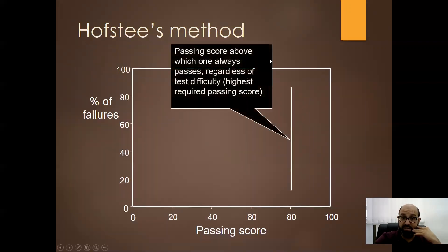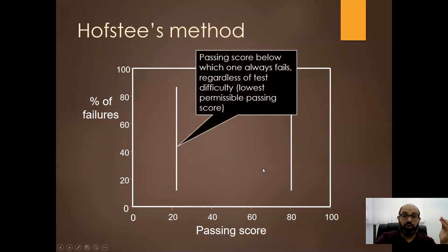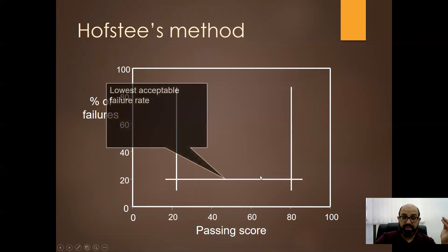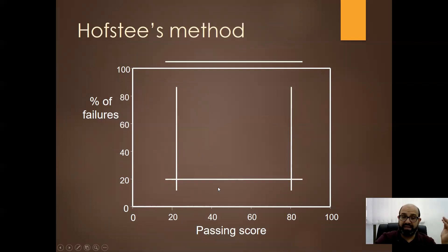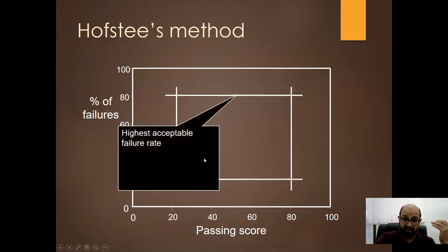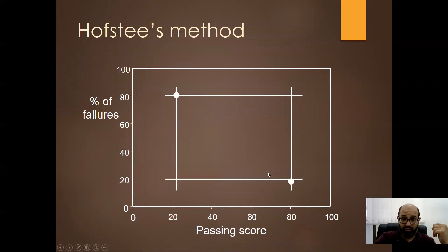So these are the four lines. Passing score above which one always passed, regardless of test difficulty, highest required passing score. And this is the lowest permissible passing score. What's the fail rate and what's the highest, the lowest acceptable and the highest acceptable fail rate? We draw this square.